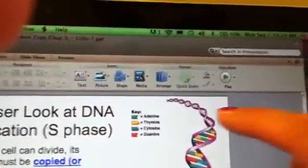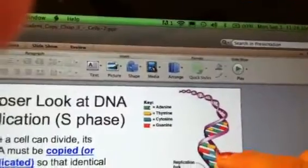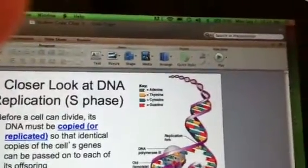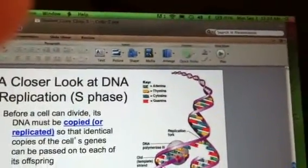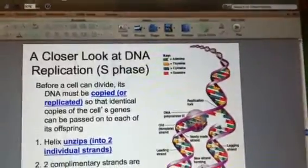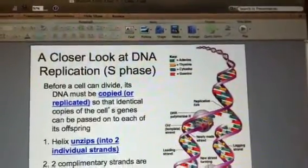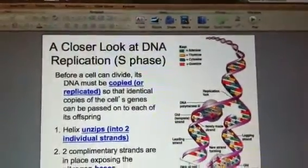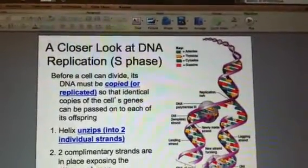Each strand of DNA, this side and this side for example, is a chain of four types of nucleotides. Nucleotides in DNA contain a deoxyribose sugar, a phosphate, and a nucleobase.